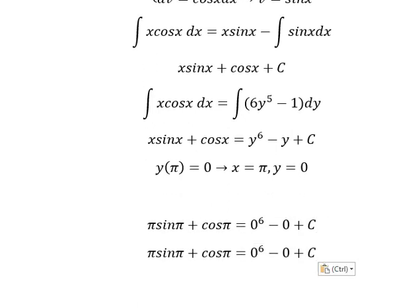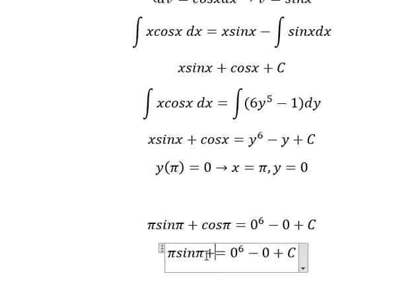About sine π, sine π you got 0. About cosine π, we have negative number 1. This one you got 0. So we simplify everything and we have C equals negative number 1.